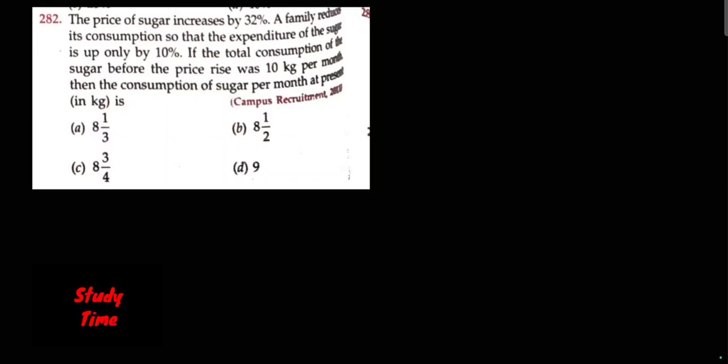then the consumption of sugar per month at present is... Let's solve this question. The price is 25% or 33%, and quantity is 25% to 33%. Expenditure goes from 10 to 11, so 2/5 into 15 or...